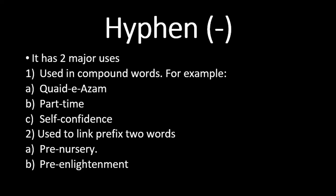The first use of hyphen is in compound words — when two separate words are combined to form a compound term, we place a hyphen between them. A very popular example is 'Quaid-e-Azam' — when we write this we add two small hyphens. Other examples: 'part-time' as in part-time jobs, and 'self-confidence' — these are two separate words joined by a hyphen. An important point: there is no space before or after the hyphen when joining two words.